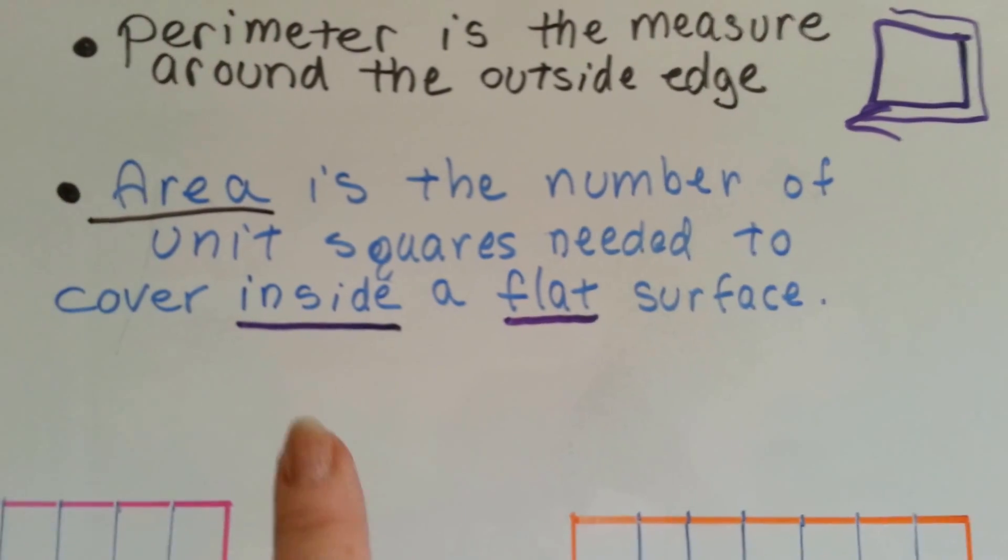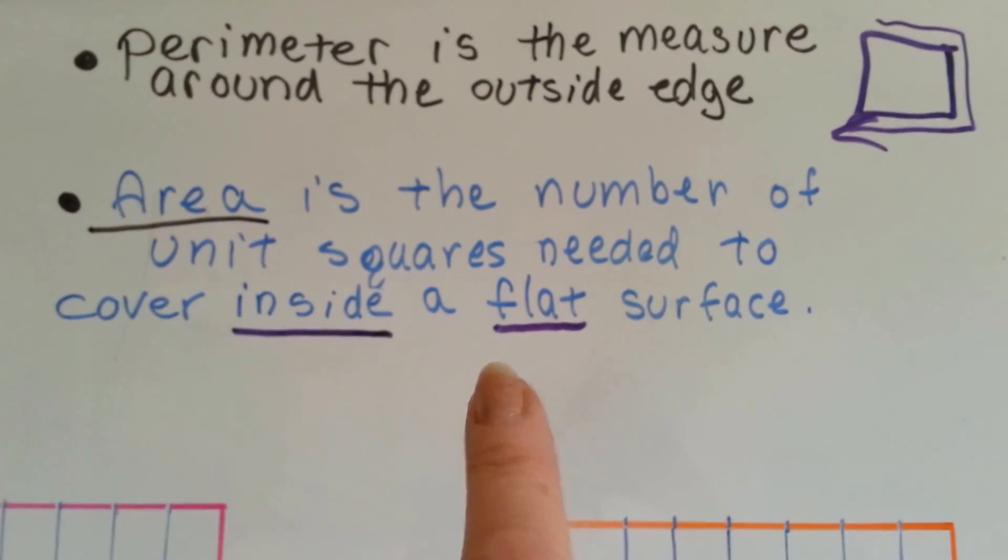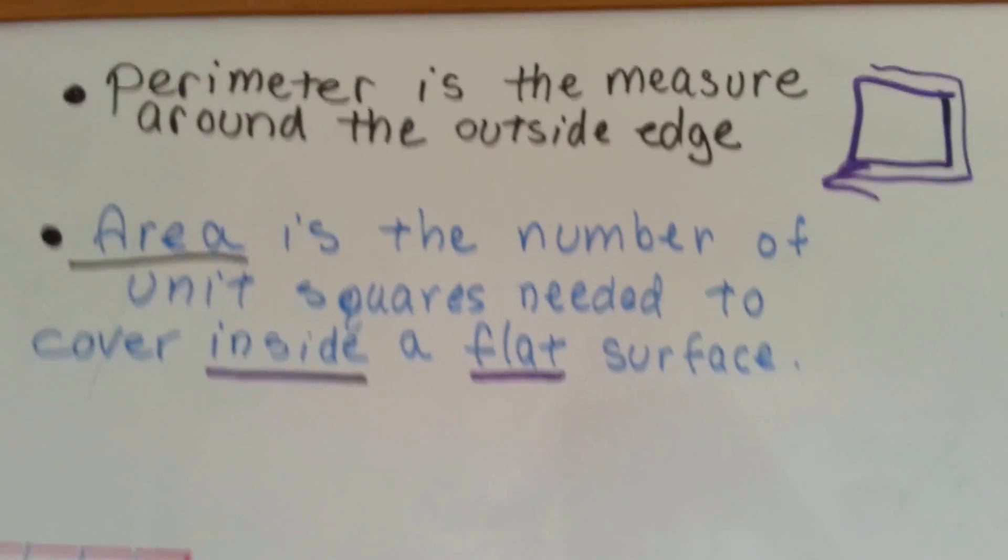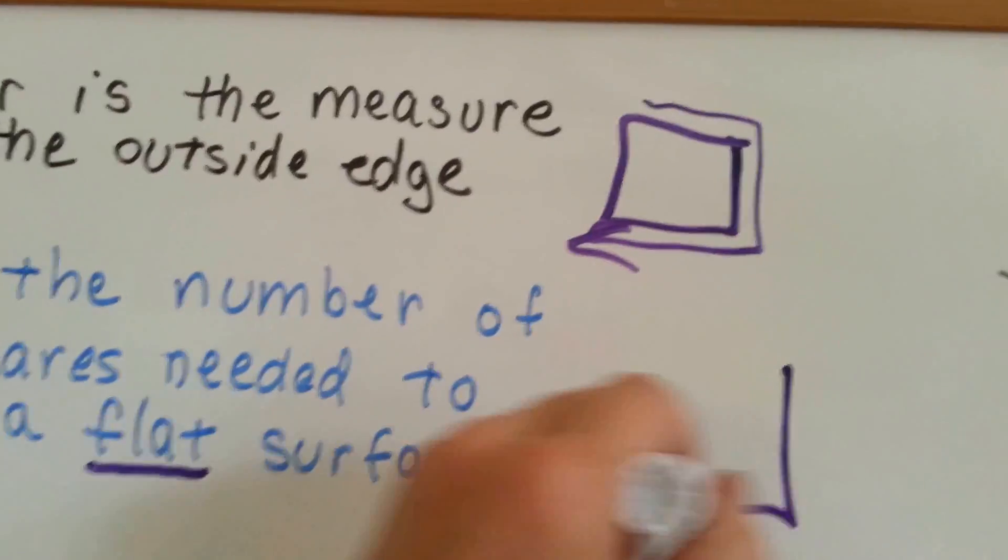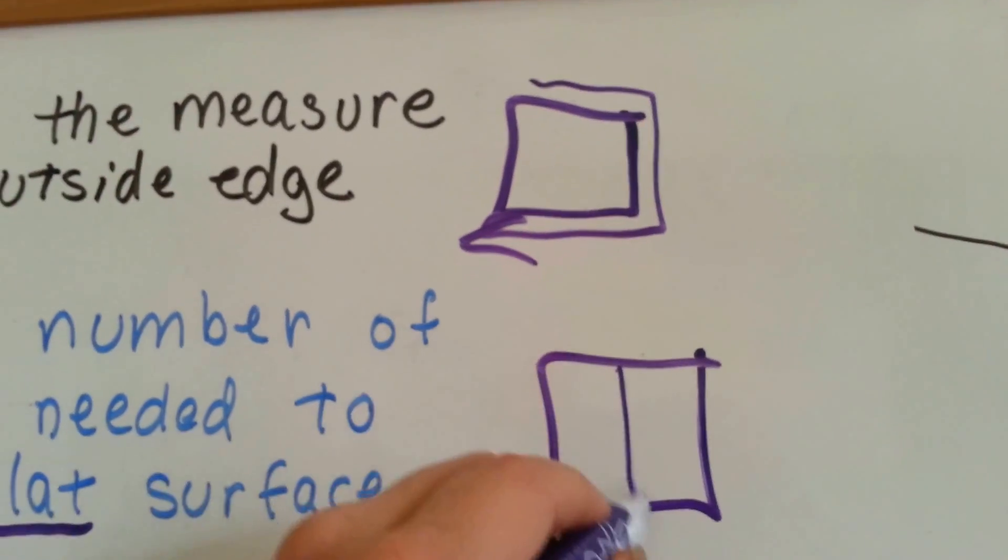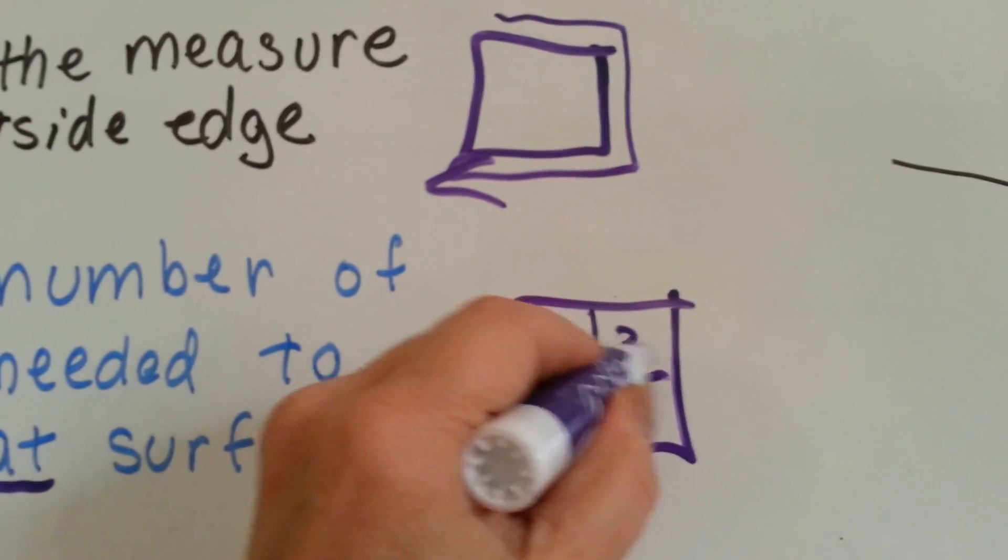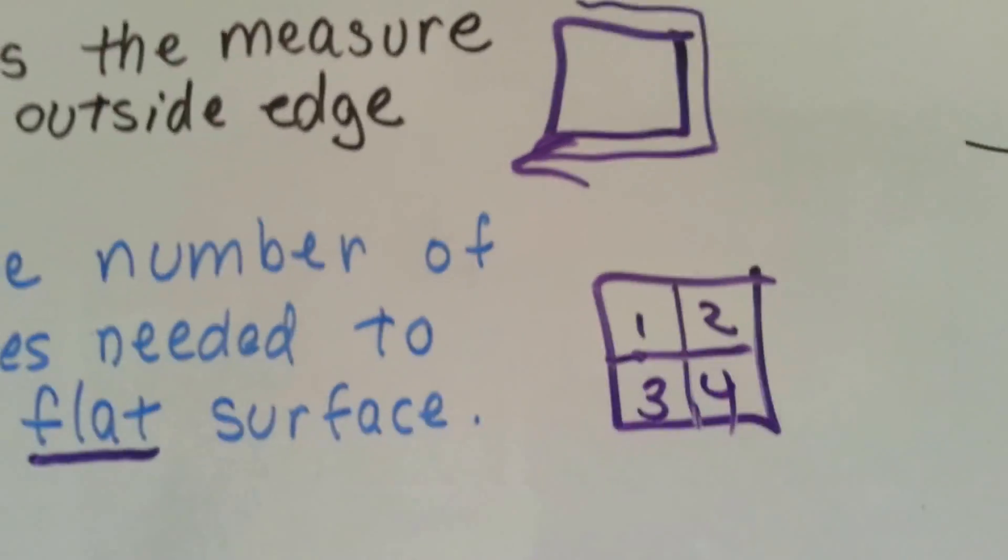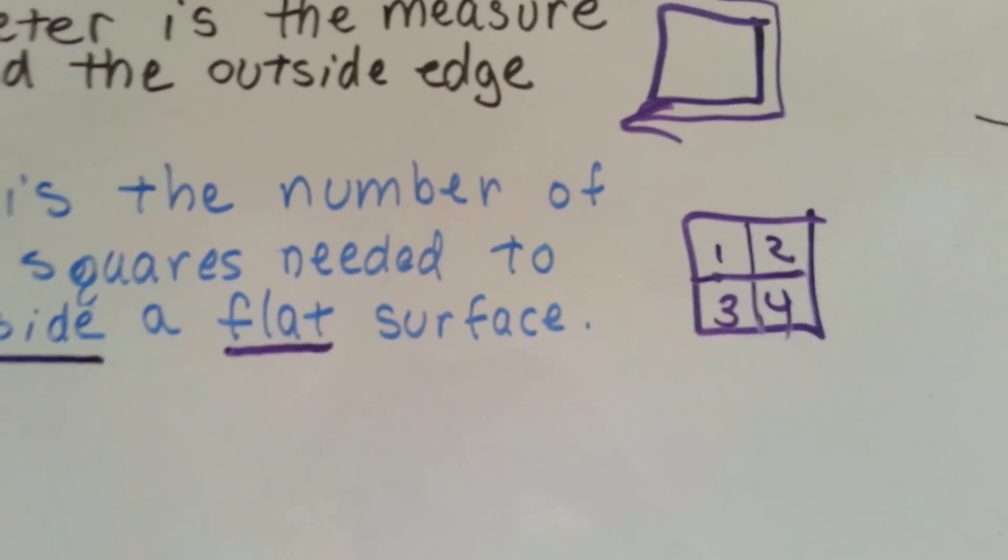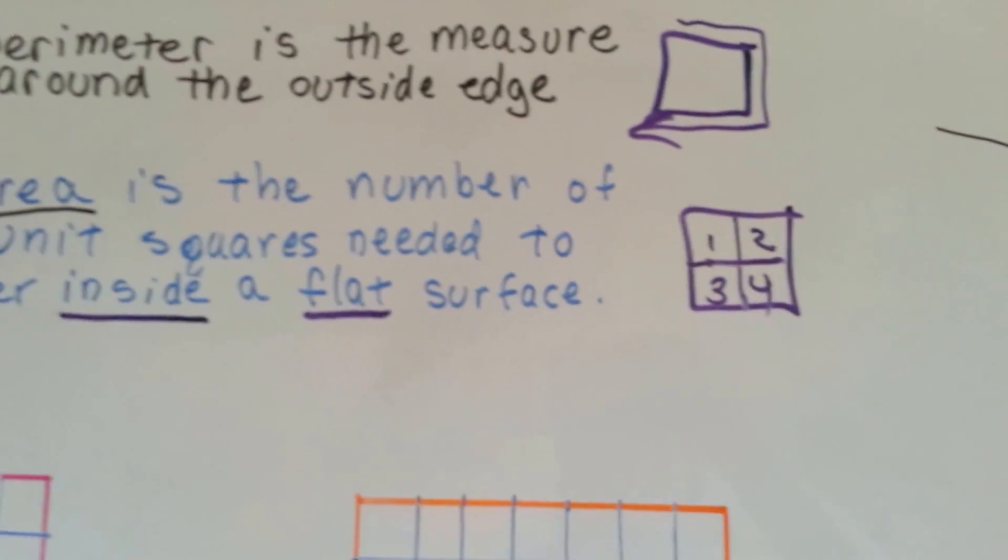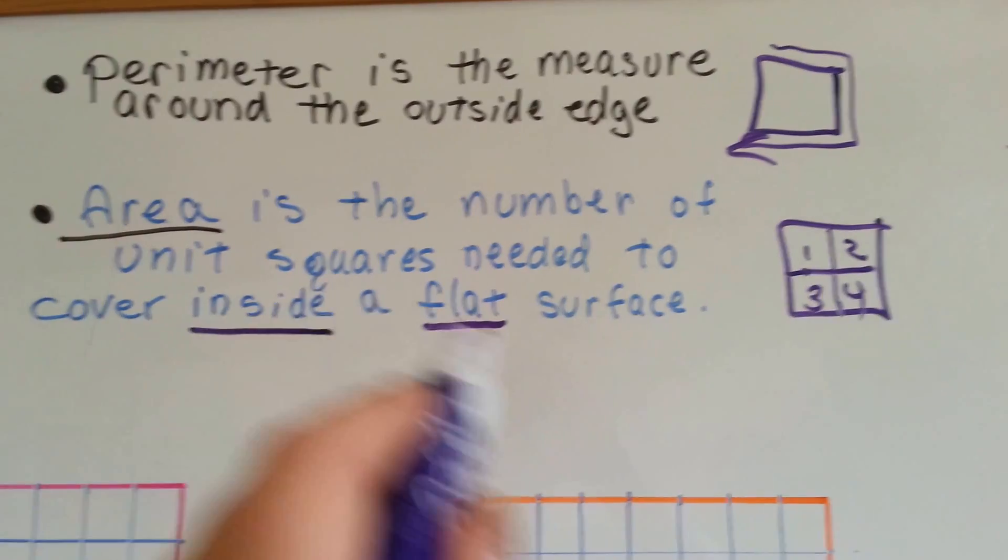Area is the number of unit squares needed to cover the inside of the flat surface. So if you have this flat surface, how many unit squares do you need to fill it? This one would be 4. That's its area. Whether it's 4 feet, 4 inches, 4 centimeters, we don't know.